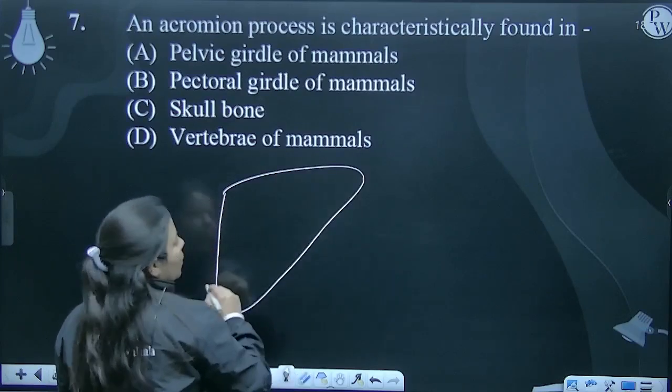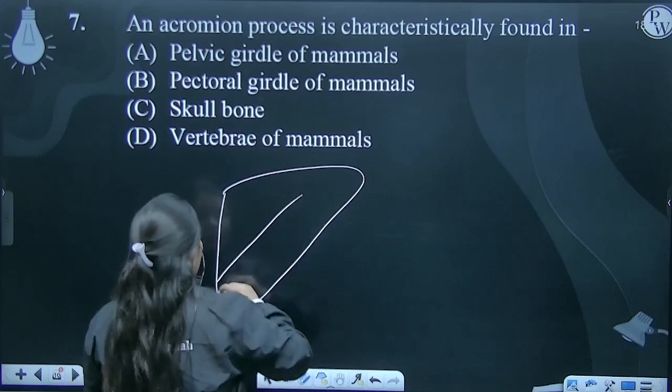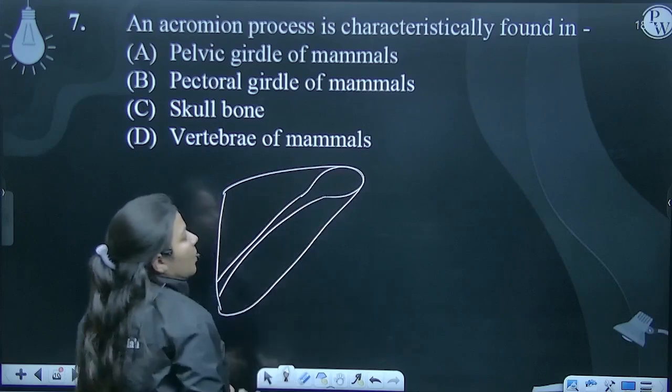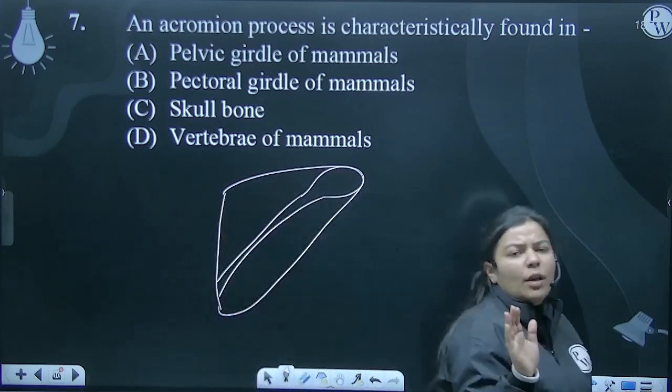There is a triangular bone in this way. In this triangular bone, there is a ridge present. Basically, what is a ridge? It is a flat bone, it is a triangular bone.